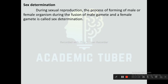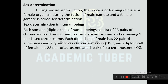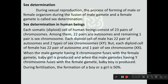Sex determination is the process of forming a male or female organism during the fusion of male and female gametes. Each somatic (diploid) cell of a human has 23 pairs of chromosomes: 22 pairs of autosomes and one pair of sex chromosomes. Each diploid cell of a male has 22 pairs of autosomes and XY sex chromosomes. Each diploid cell of a female has 22 pairs of autosomes and XX sex chromosomes. When the male gamete carrying an X chromosome fuses with the female gamete, a baby girl is produced; when the male gamete carrying a Y chromosome fuses with the female gamete, a baby boy is produced. The probability of forming a boy or girl during fertilization is 50%.